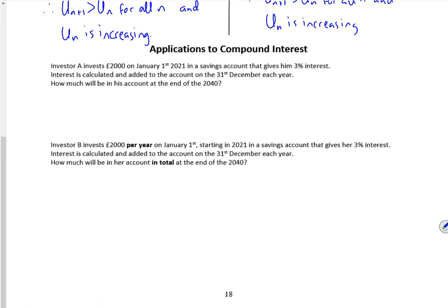Right, let's have a look at some compound interest. So this is new, a bit of compound interest. Bound to get this one. It says Investor A invests £2000 on 1st January 2021. You've got 3% interest. Interest is calculated and added at the end of the year. So it's done annually.